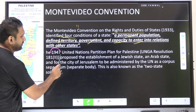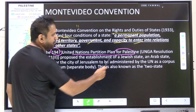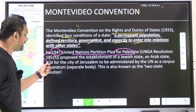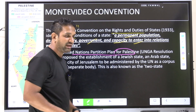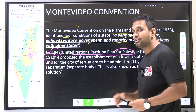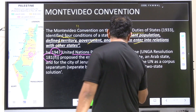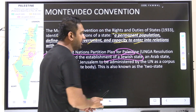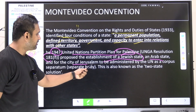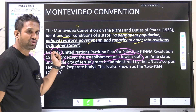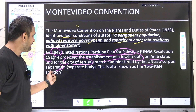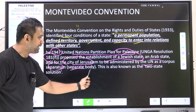The 1947 United Nations Partition Plan for Palestine proposed the establishment of a Jewish state, an Arab state (Palestine), and the city of Jerusalem to be administered by the United Nations as a corpus separatum — a separate body. Sometimes they ask for the resolution number in examinations — the last UPSC 2022 asked about a labor convention number, so be aware of convention numbers as well.